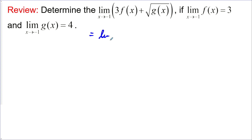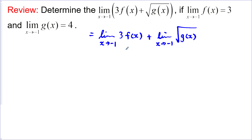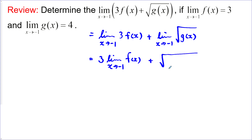So let's rewrite this: the limit as x approaches negative 1 of 3f(x), plus the limit as x approaches negative 1 of the square root of g(x). We can take this one step further. If this 3 is just a constant being multiplied by f(x), then we could move the limit inside and find out where f(x) is going as we approach negative 1, and then multiply that result by 3. The same thing applies to the square root: if g(x) is going to get closer and closer to something, we can just take the square root of that result after. So we'll slip the limit as x approaches negative 1 inside the radical.